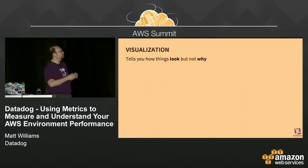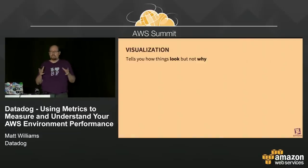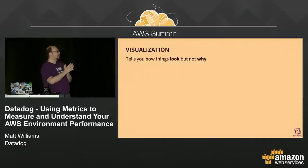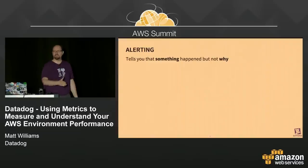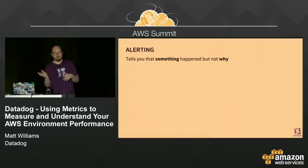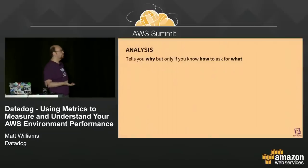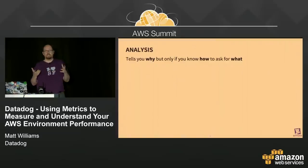Each one of those things breaks down differently. A visualization tells you how things look, but not why. If you look at enough visualizations, maybe you can figure out the why. Alerting tells you that one particular thing happened — it went over a certain threshold, below a certain threshold, or there was a sudden change — but it's not going to tell you why. It's the analysis that tells you why, but only if you know how to ask for what. Those three things combine to make up what we think of as monitoring.